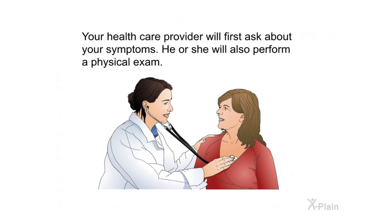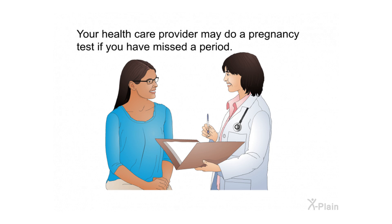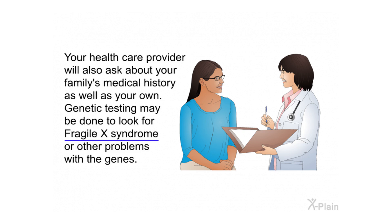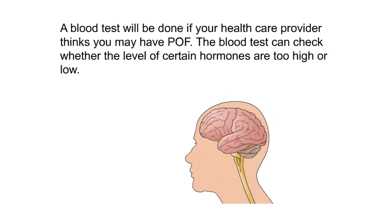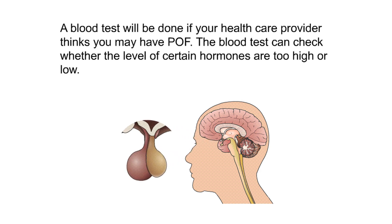To diagnose POF, your health care provider will first ask about your symptoms and perform a physical exam. A pregnancy test may be done if you have missed a period. Your provider will also ask about your family's medical history, and genetic testing may be done to look for fragile X syndrome or other genetic problems. A blood test will also be performed to check whether levels of certain hormones are too high or low.